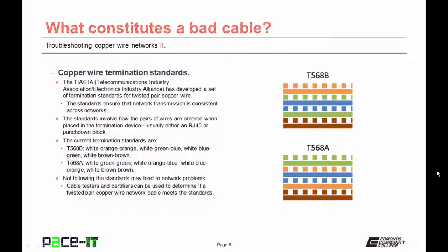The current standards are the T568B and the T568A standard. The pinout for the T568B standard is: white-orange, orange, white-green, blue, white-blue, green, white-brown, brown. On the other hand, the pinout standard for the T568A standard is: white-green, green, white-orange, blue, white-blue, orange, white-brown, brown. Not following the standards may lead to network problems. Cable testers and certifiers can be used to determine if a twisted pair copper wire network cable meets the standards.